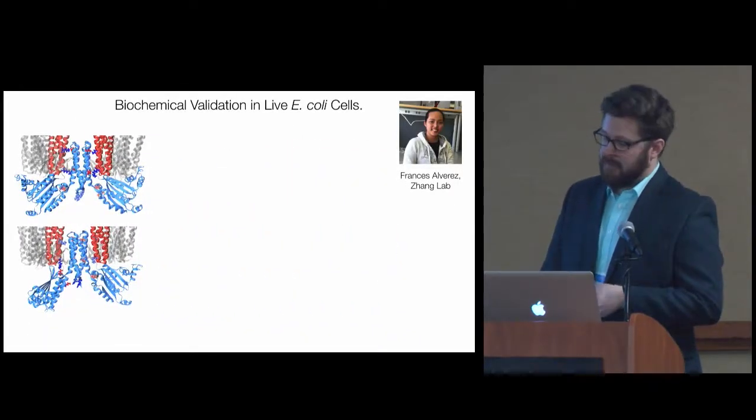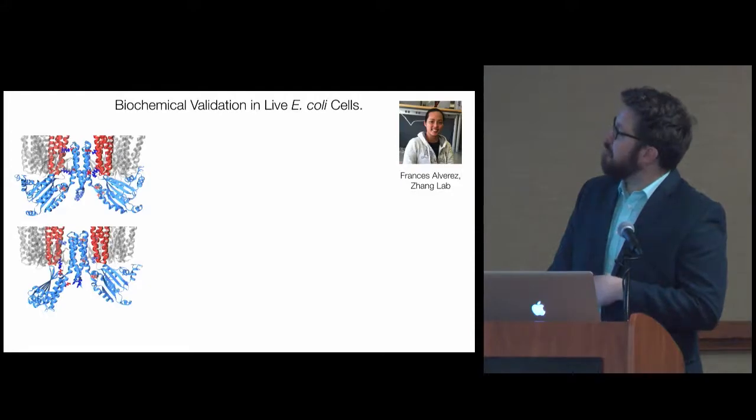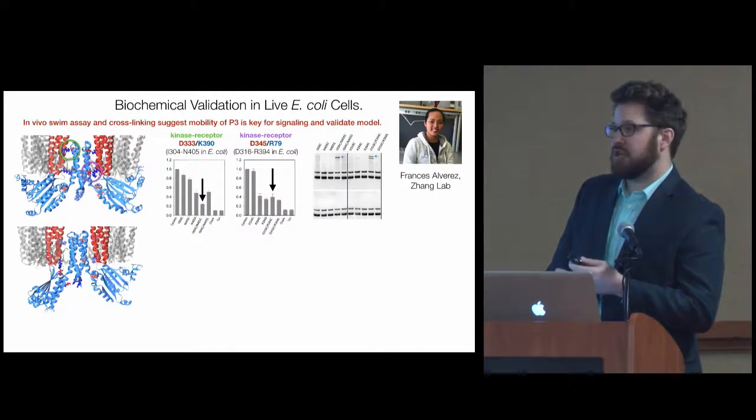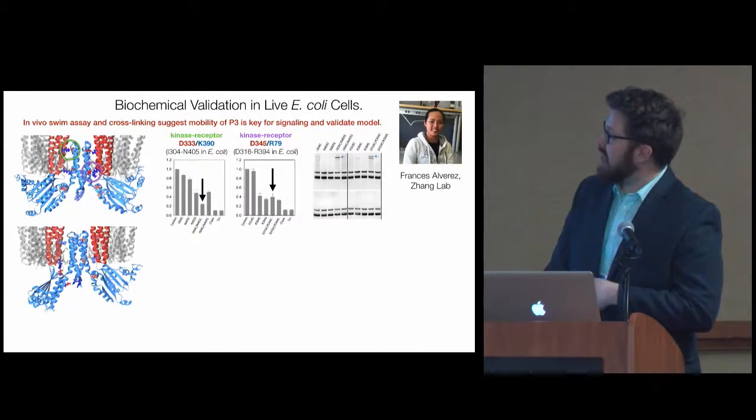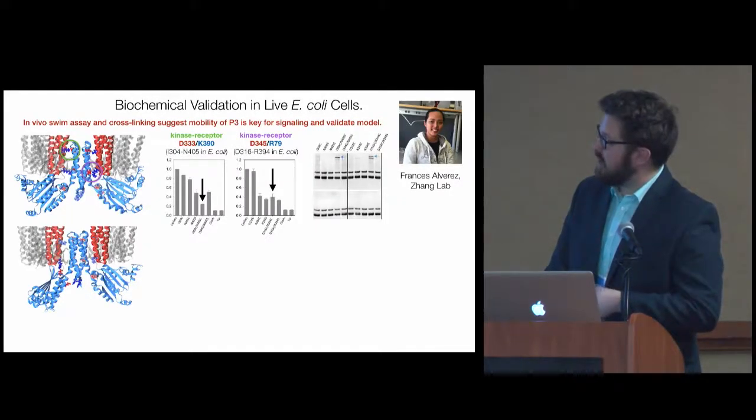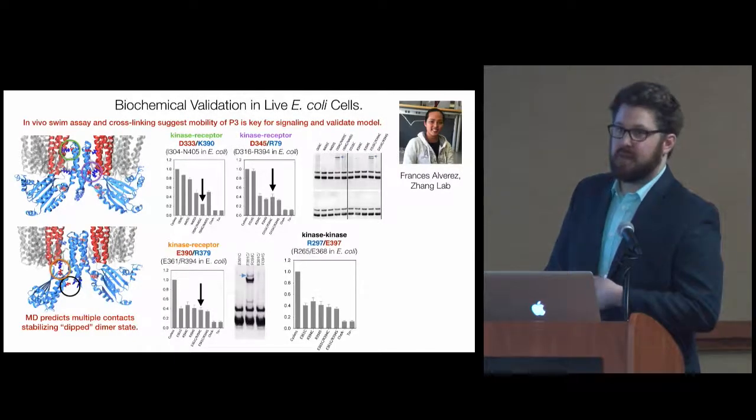So we did that. We went back, based on the predictions of MD, we went back to Peijun. Frances Alvarez in her lab conducted these experiments. We looked at swim assays and cross-linking basically to see that the residues we showed to be near each other and important for the individual classes were actually able to cross-link and that affecting them did affect chemotaxis. That was seen to be the case for both classes of the structures. It helped to validate our model. It also showed that this less-occupied but dipped state is actually being sampled in native cells in E. coli.